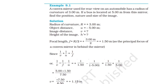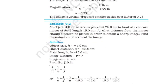Example 9.1: A convex mirror used for rear view on an automobile has a radius of curvature of 3.00 m. If a bus is located at 5.00 m from this mirror, find the position, nature, and size of the image. The answer can be seen from the book. Example 9.2: An object 4.0 cm in size is placed at 25.0 cm in front of a concave mirror of focal length 15.0 cm. At what distance from the mirror should a screen be placed to obtain a sharp image? Find the nature and size of the image. The answer can be seen from the book.